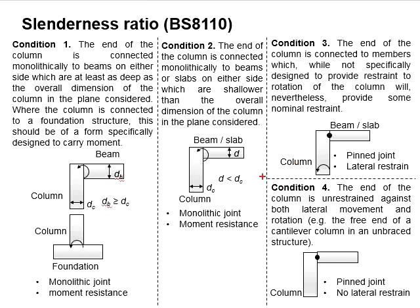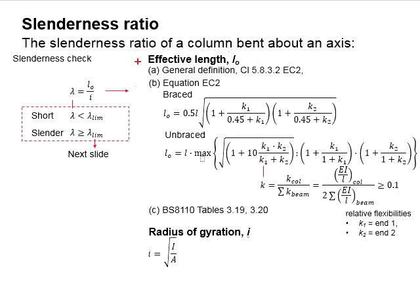Lastly, Condition 4 refers to a column pin joint with no rotational restraint at the column. With that, the effective length can be determined and the slenderness ratio of the column can be calculated.